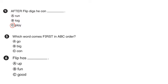Number 5. Which word comes first in A, B, C order? Is it go, big, or can? In order to remember, you can write the letters A, B, C, D, E, F, G. In ABC order, G is the last. So A is not the answer. The first letter of big is B, and the first letter of can is C. Now which comes first, B or C? It is B. So the answer is big.